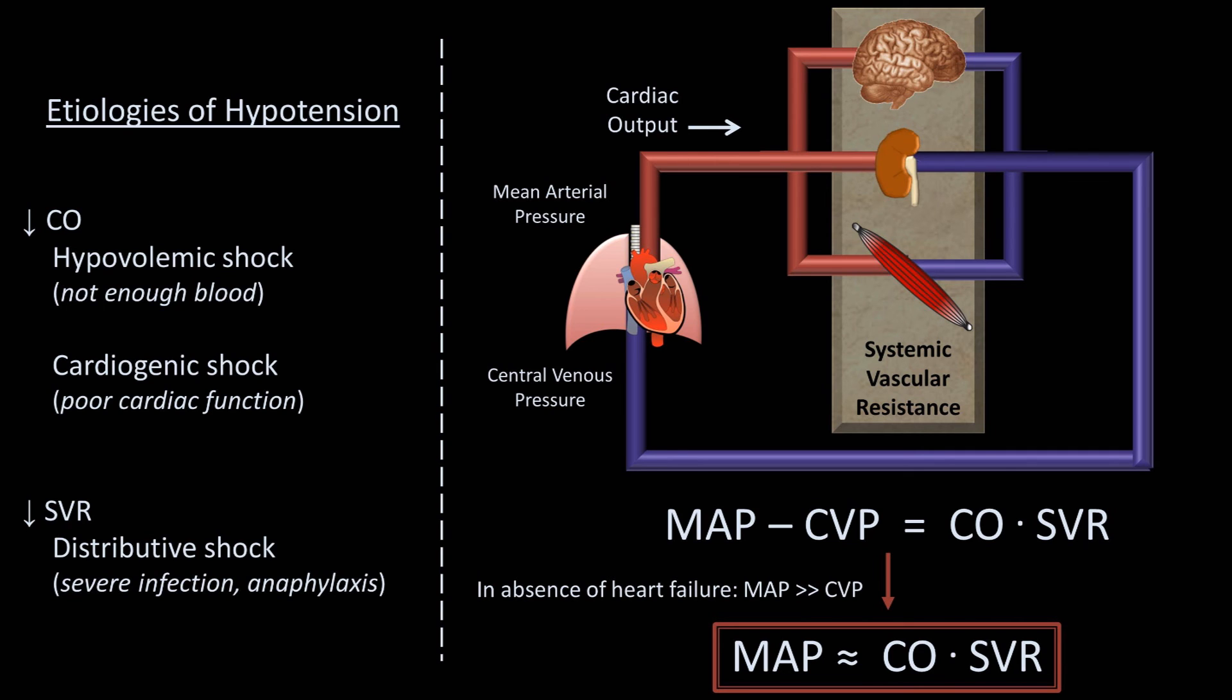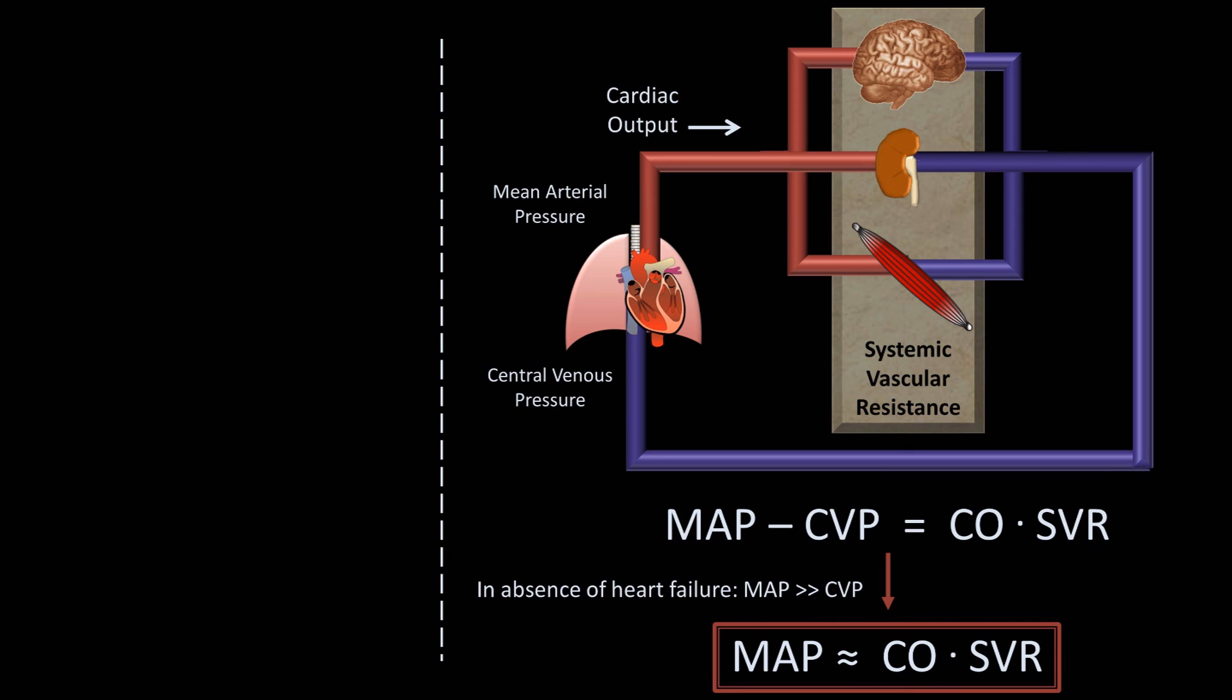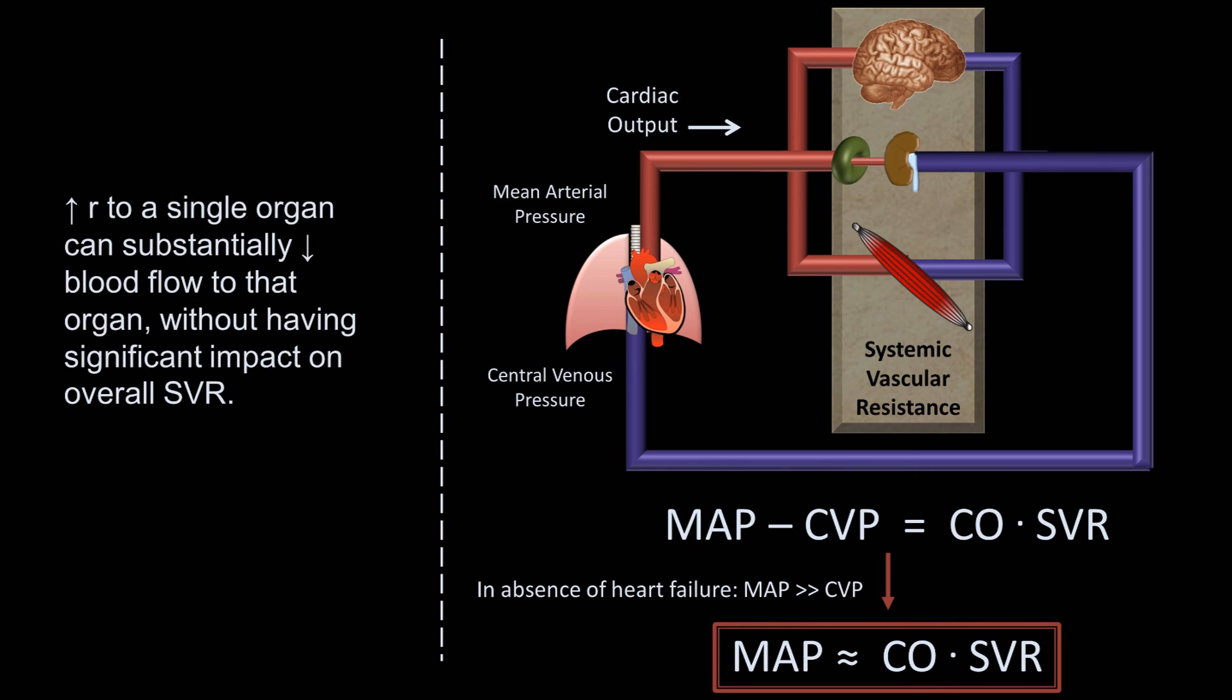There is one more point I'd like to make related to Ohm's Law for Hemodynamics. Imagine that, for some reason, the resistance to blood flow to a single organ is dramatically increased. In this case, something is causing extrinsic compression on the renal artery. Increasing resistance to a single organ can substantially decrease blood flow to that organ without having significant impact on the overall systemic vascular resistance, and blood will simply be diverted through the many other organs.